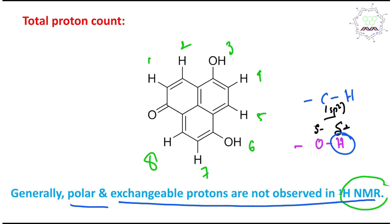Apart from the OH protons, there are sp2 C–H protons, and these are observed. If you look at the structure, you can count one, two, three, four, five, and six — so six types of protons can be expected from this structure. But that is not the complete picture; there is a uniqueness to this problem that we will explore in the next slide.